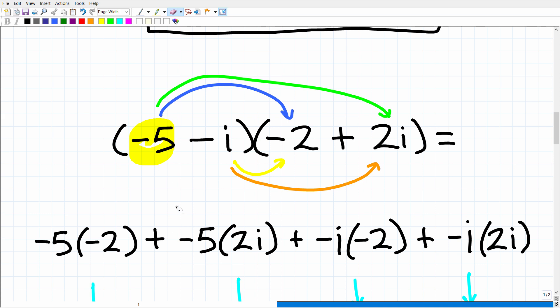So we have FO, first, outer. The outer would be these two terms right here, indicated by this green arc. And then we have first, outer, inner. So the inner would be this times this. And then last would be the last of this one and the last of this binomial right there. These are complex numbers, but just treat them as two binomials.